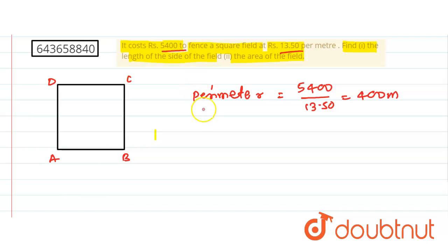But what is the perimeter of the square? This is nothing but 4 into side. Perimeter is nothing but 4 into side. This is equal to 400.